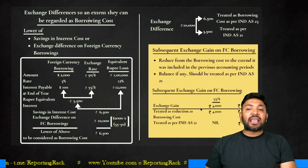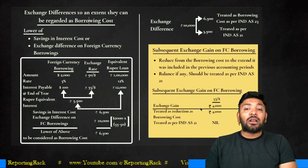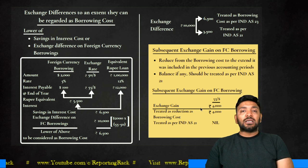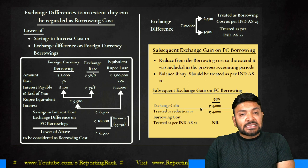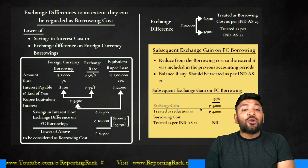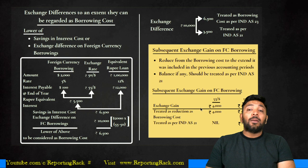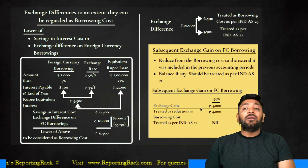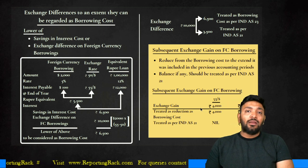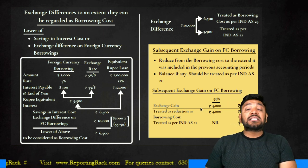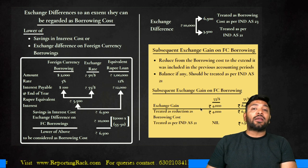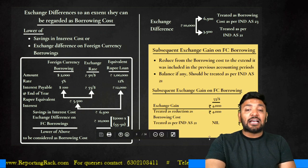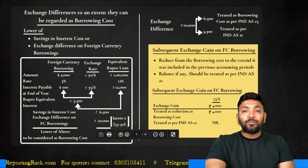Two examples to illustrate: if the dollar rate comes down to 53 rupees per dollar in the subsequent year, the exchange gain is 4,000, which is less than 6,500 — so the full 4,000 is reduced from borrowing cost. But if the exchange rate goes down to 51 rupees per dollar, the exchange gain is 8,000: out of 8,000, only 6,500 is treated as a reduction from borrowing cost, and the balance 1,500 is treated as exchange gain as per Ind AS 21.